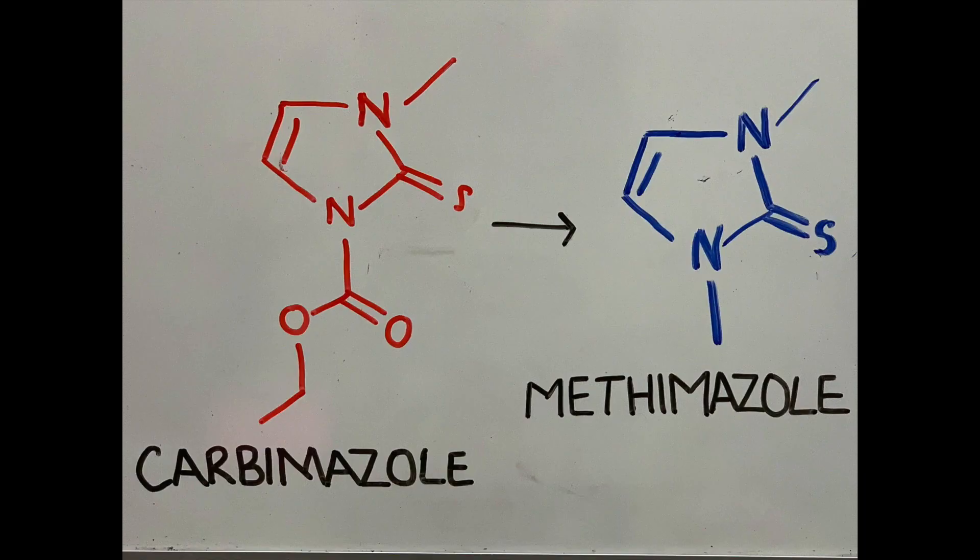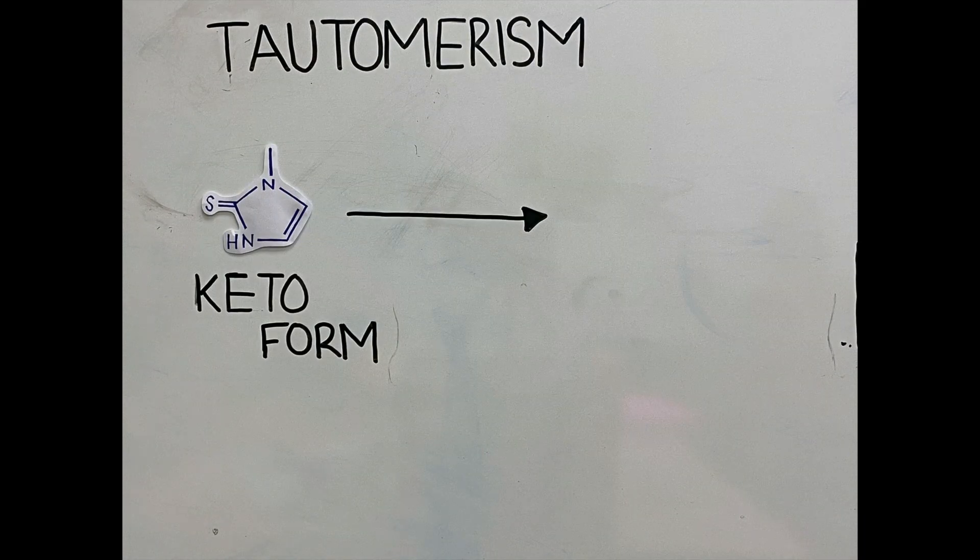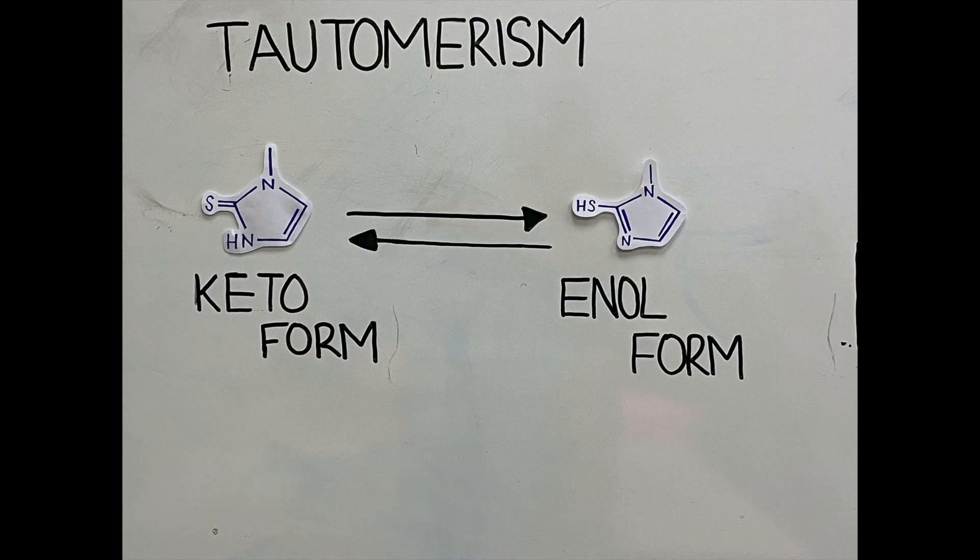Carbamazole's structure allows the compound to be in either a keto or enol form due to tautomerism. Carbamazole exists as the thione tautomer, which suggests that it may be the stable form of the compound.